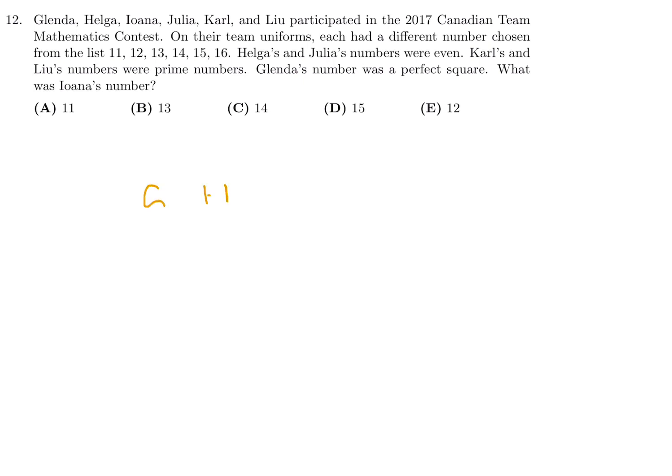Glenda, Helga, Iona, Julia, Carl, and Lou participated in the 2017 Canadian Team Math Contest. On their team uniforms, each had a different number chosen from the list 11, 12, 13, 14, 15, 16. Helga's and Julia's numbers were even, Carl and Lou's numbers were prime, and Glenda's number was a perfect square. What was Iona's number?